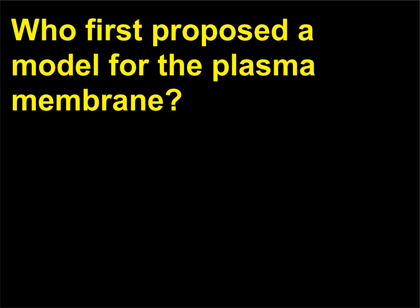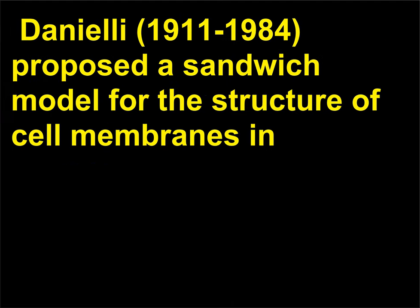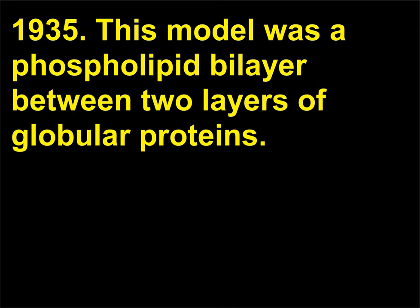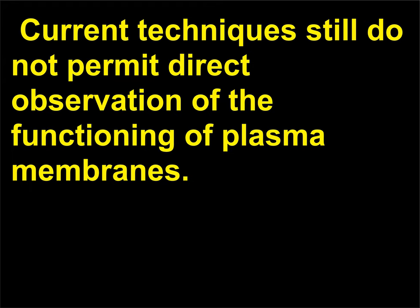Who first proposed a model for the plasma membrane? Following the earlier work of Gorter and Grendel on cell membranes, Hugh Davson (1909–1996) and James F. Danielli (1911–1984) proposed a sandwich model for the structure of cell membranes in 1935. This model was a phospholipid bilayer between two layers of globular proteins. Since cell membranes are so fragile in vivo, one can only propose theoretical models for their structure, and current techniques still do not permit direct observation of the functioning of plasma membranes.